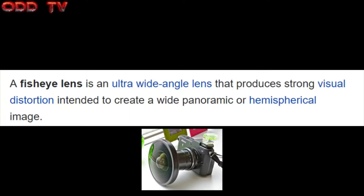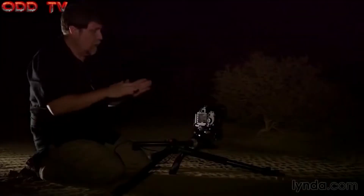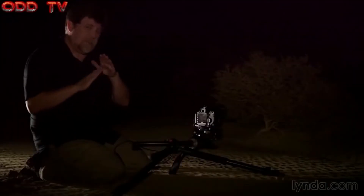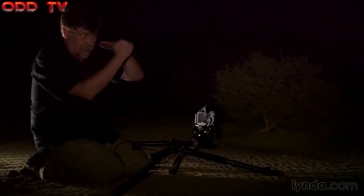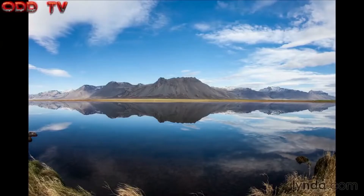The definition of a fisheye lens is an ultra wide-angle lens that produces strong visual distortion to create a wide panoramic or hemispherical image. When this lens is arranged sort of straight on to the horizon, it doesn't have any weird curvature or distortion — it just looks ultra wide. There might be a little bit of distortion on the edges, but it looks just super wide.